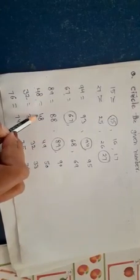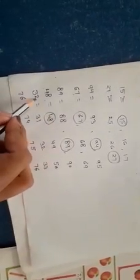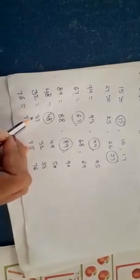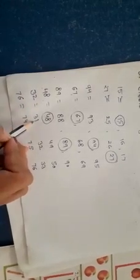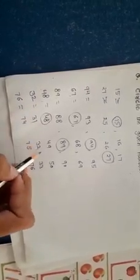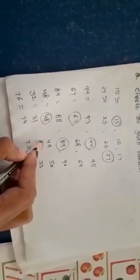Next, 48 — find the number 48 in this line: 48, 49, 50, 48 — circle the number 48. Next, 32 — find the number 32: 31, 31, 32, 32 — circle the number 32.